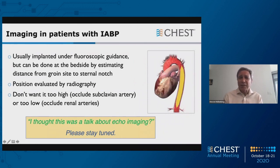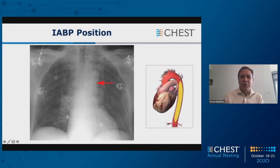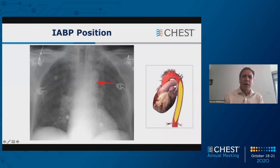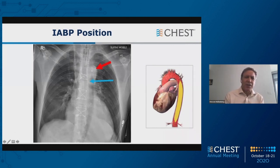So you thought this was a talk about echo imaging — well, stay tuned a little bit. Here is an X-ray of an intra-aortic balloon pump positioned. You can actually see a Swan-Ganz catheter in there, but the red arrow shows the intra-aortic balloon pump. You want to position it at the carina, which is roughly equivalent to the place in the aorta where the subclavian takes off. This is perfectly placed. If you're looking from the outside, the carina and the sternal notch are roughly in the same place, which is why externally you position it to the sternal notch. Here's a picture where the balloon pump is too high — it's all the way up in the ascending aortic arch, with the potential to occlude subclavian flow and impair cerebral perfusion.